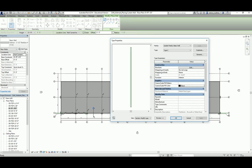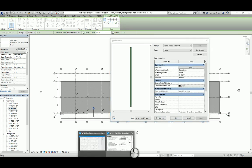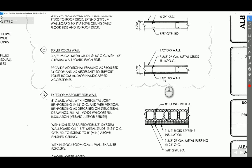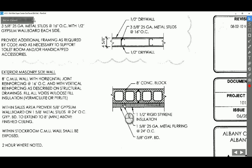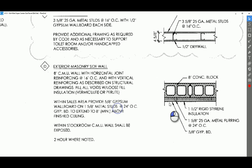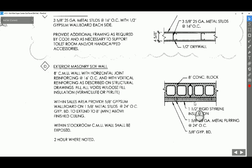Type D wall is quite different because it's no longer gypsum board based. It's an eight-inch concrete masonry block with one and five-eighths inch metal furring — which is essentially a small metal stud — and a five-eighths inch gypsum board. The insulation is rigid insulation snapped between the metal furring, so we're still going to ignore it. We'll choose an existing masonry wall as a baseline, then customize it.